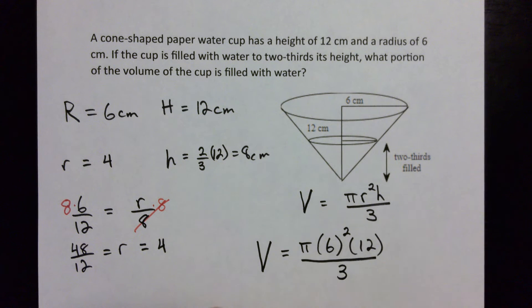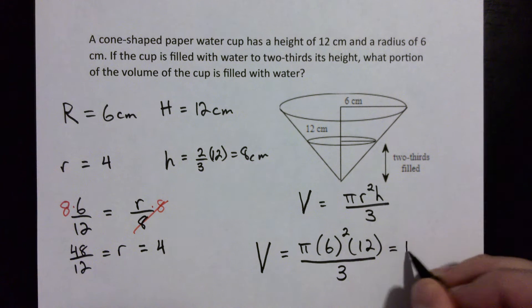Okay, and if we work this out we get 6 squared which is 36 times 12 and then divide by 3, you will get 144 π centimeters cubed.